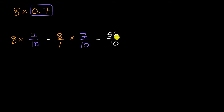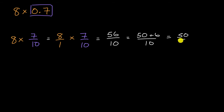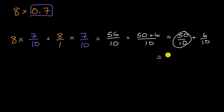56-tenths can also be written as 50 plus six over 10, which is the same thing as 50 over 10 plus six over 10. 50 over 10 is five wholes, so we get five and six-tenths, which we can write as 5.6.